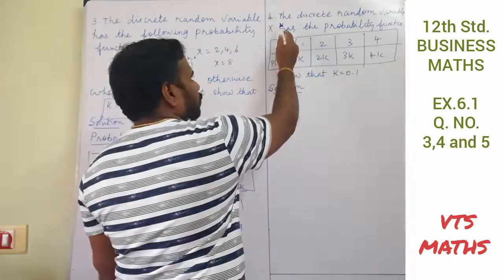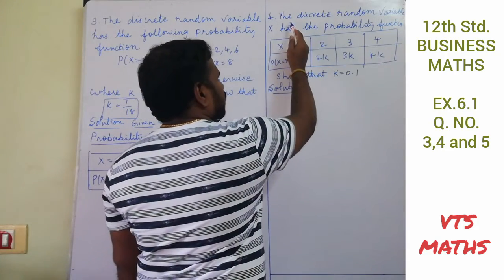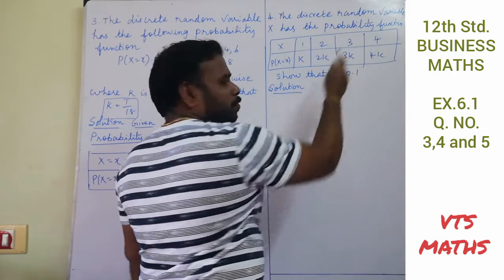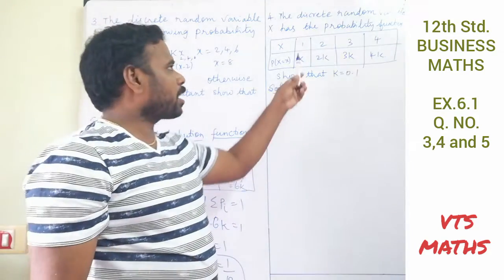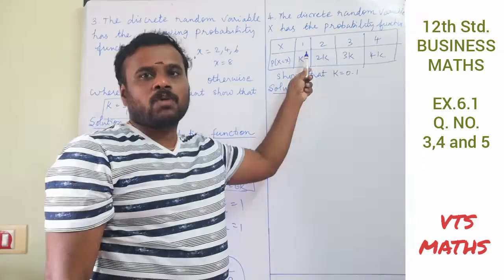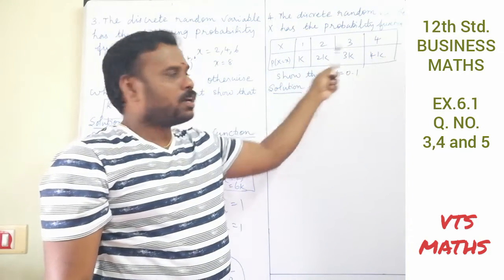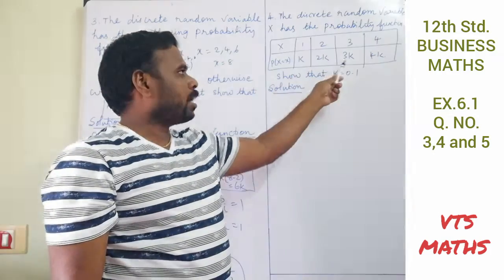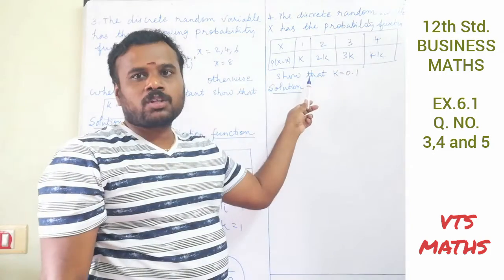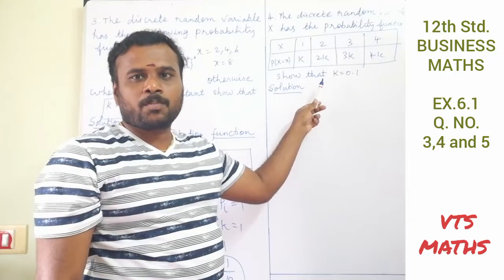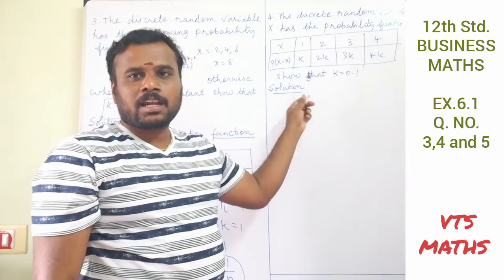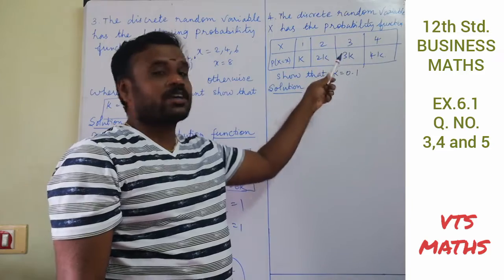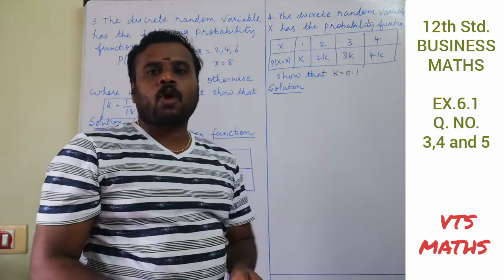Next, Question No. 4. The discrete random variable x has the following probability function: x = 1, 2, 3, 4 with corresponding probabilities k, 2k, 3k, 4k. Show that the value of k is equal to 0.1.